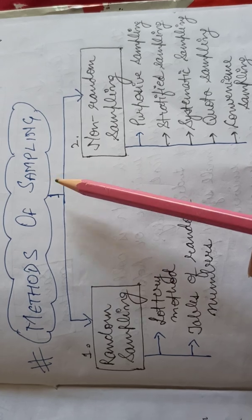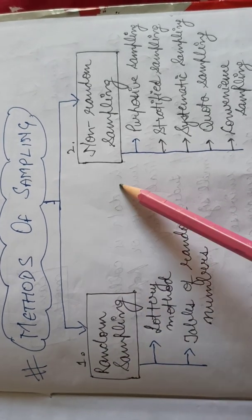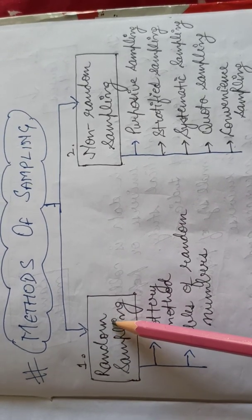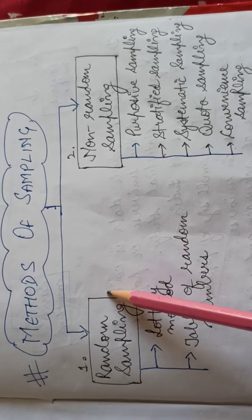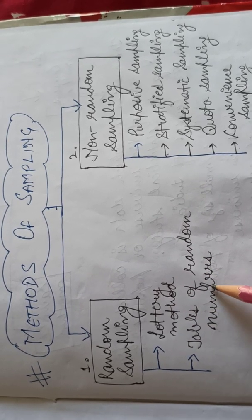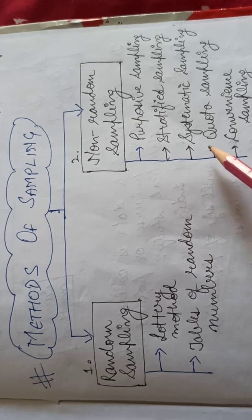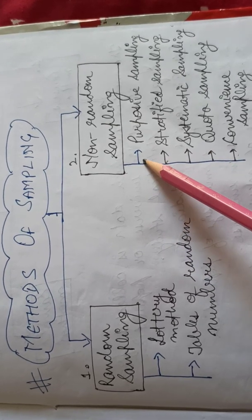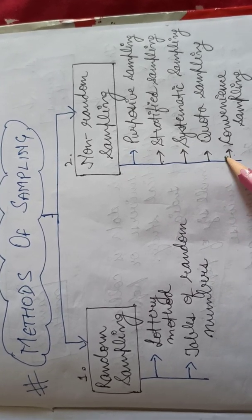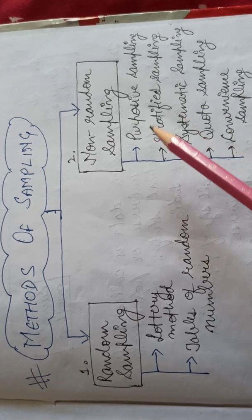We will look at how sampling is done. Basically there are two main methods of sampling. The first one is random sampling and another one is non-random sampling. Under non-random sampling, there are five main methods: purposive sampling, stratified sampling, systematic sampling, quota sampling, and convenience sampling. We will make use of these methods according to the suitability of our statistical study.